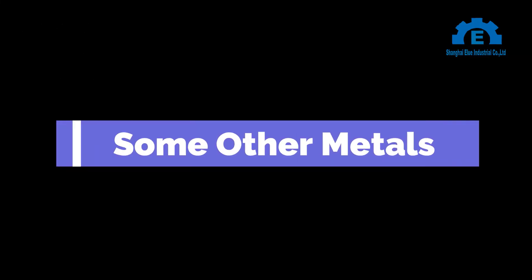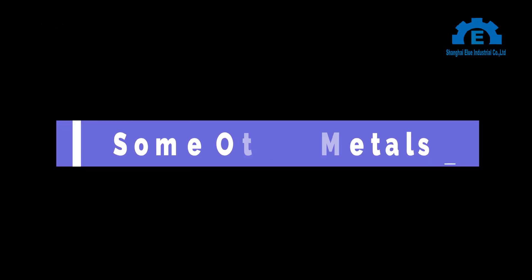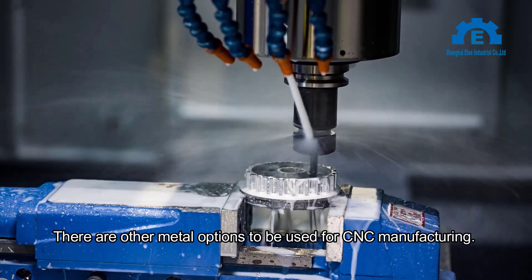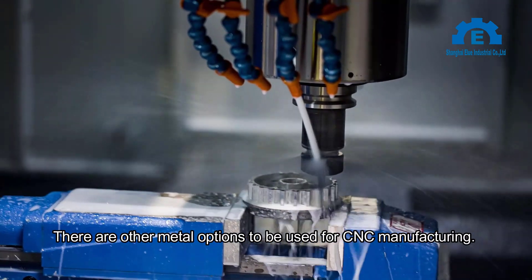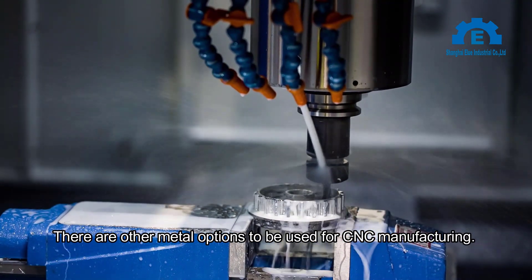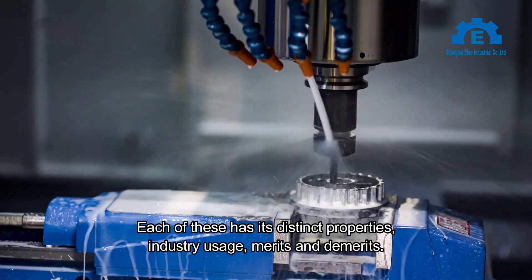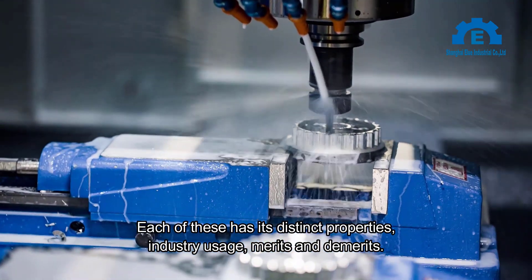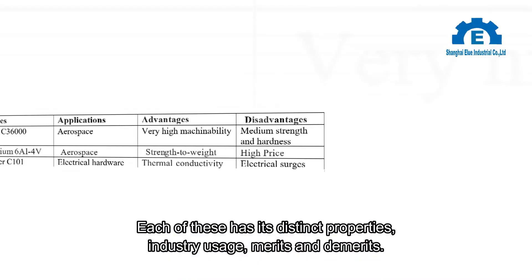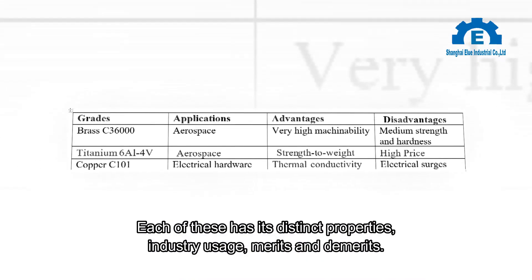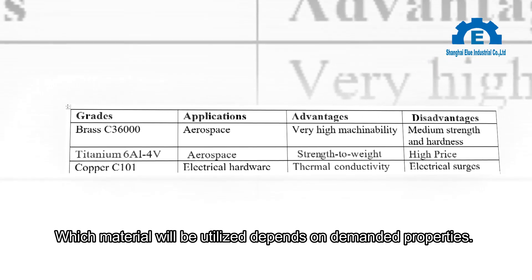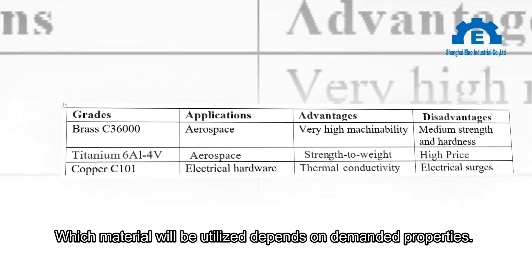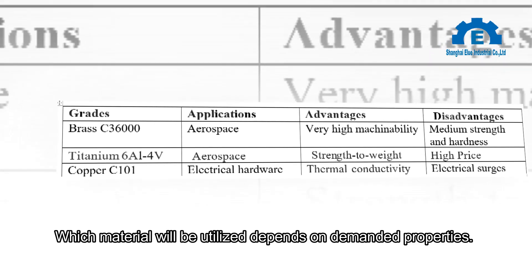There are other metal options to be used for CNC manufacturing. Each of these has its distinct properties, industry usage, merits, and demerits. Which material will be utilized depends on the demanded properties.